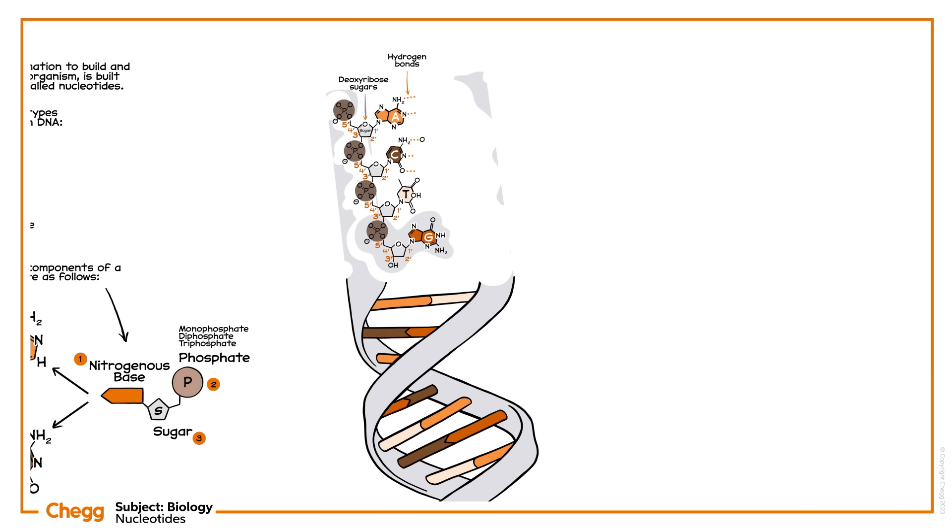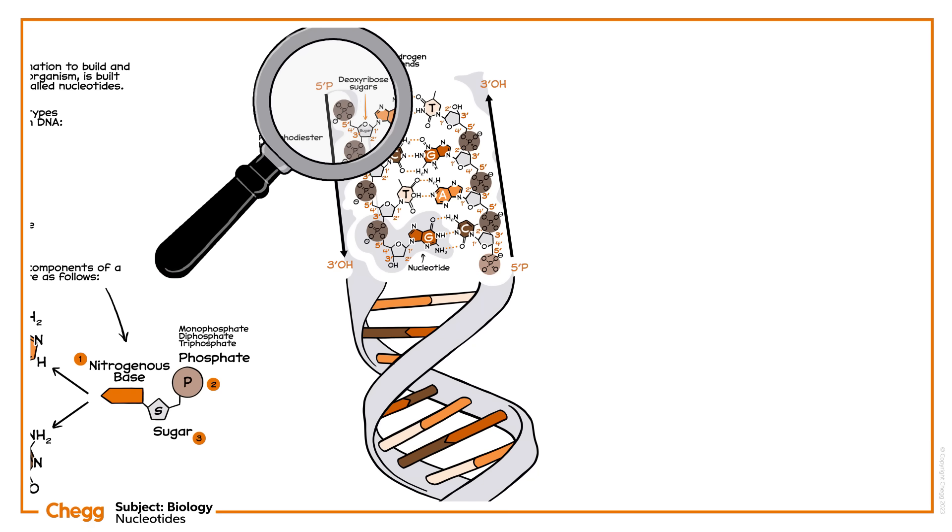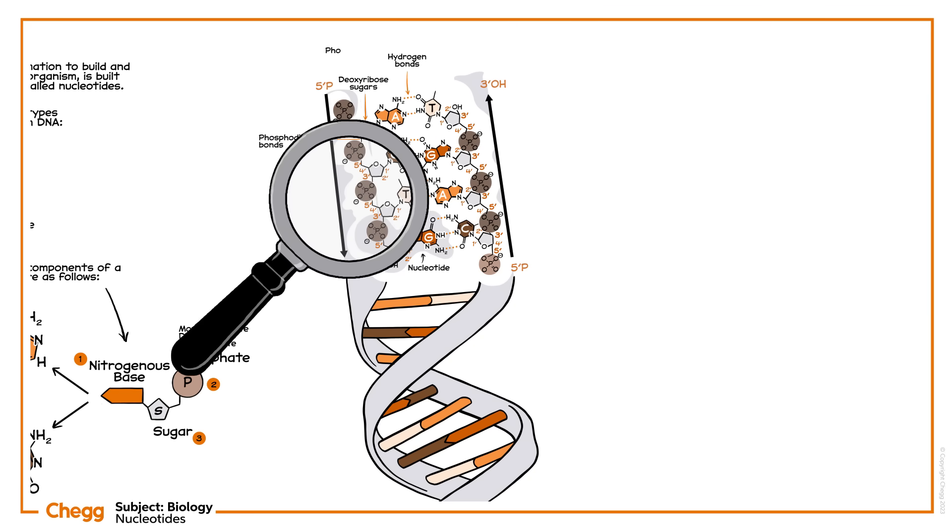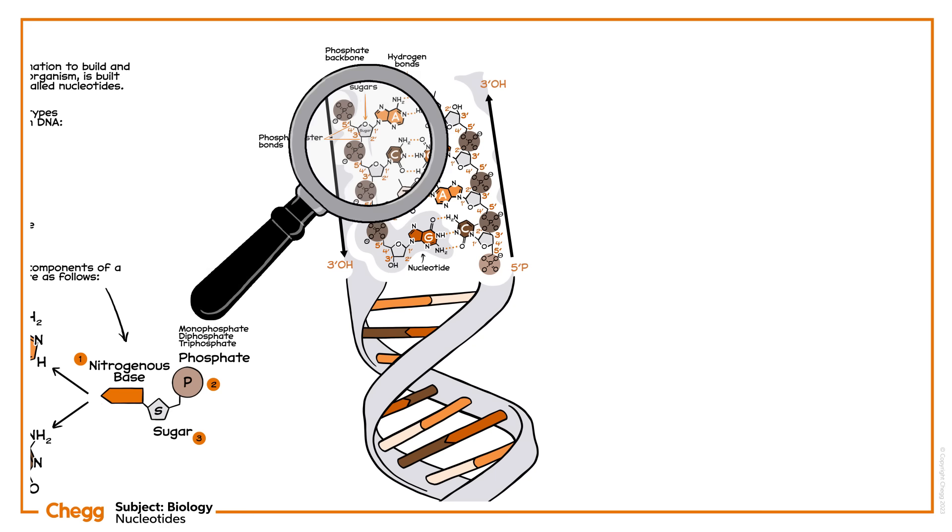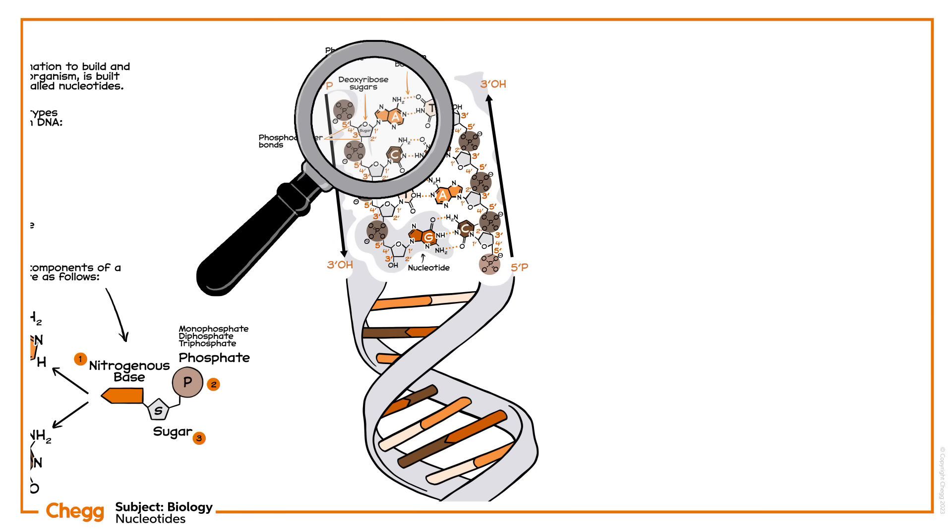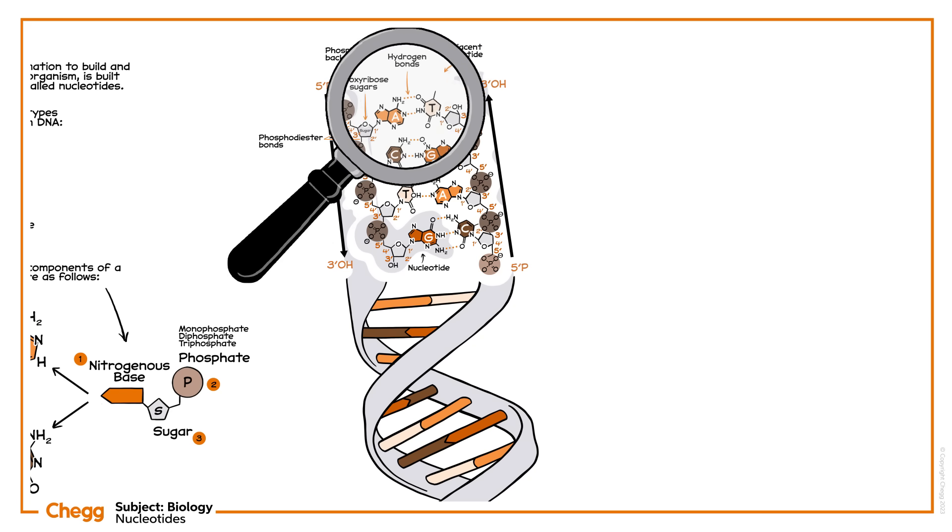How are these three components connected? Well, the base is covalently bonded to the one prime carbon of the sugar. The sugars and phosphate groups of nucleotides are linked by phosphodiester bonds, forming what's called a sugar-phosphate backbone. The 5' carbon of one sugar is bonded to the phosphate group within the same nucleotide, and this phosphate group is then linked to the 3' carbon of the sugar in the adjacent nucleotide.